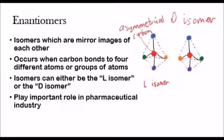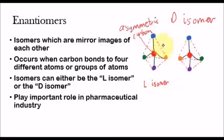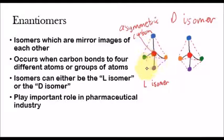The final type of isomer is called enantiomers. These are isomers which are mirror images of each other. It occurs when carbon bonds to four different atoms or four different groups of atoms. Here we have a carbon atom in the middle with four different groups of atoms represented by different colors: blue, orange, purple, and green. This is when enantiomers start to form. A carbon which is bonded to four different groups of atoms is called an asymmetric carbon.